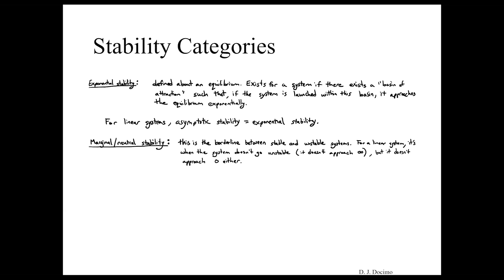Now, marginal or neutral stability, this is the border between stable and unstable systems. So for a linear system, it's when the system doesn't go unstable, it doesn't approach infinity, but it never approaches zero either. So that's in between those two.